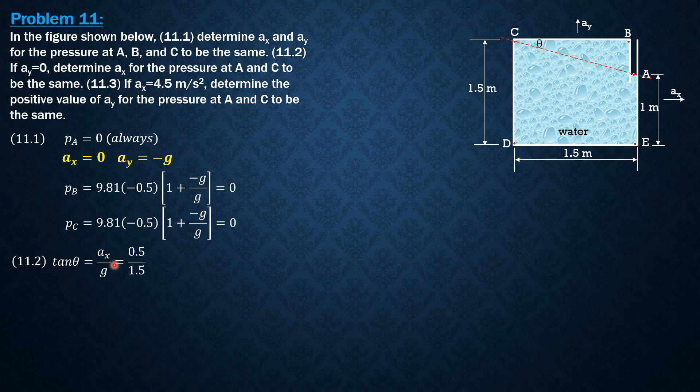So AX therefore is G over 3 or 9.81 over 3. So AX is 3.27 meters per second squared.